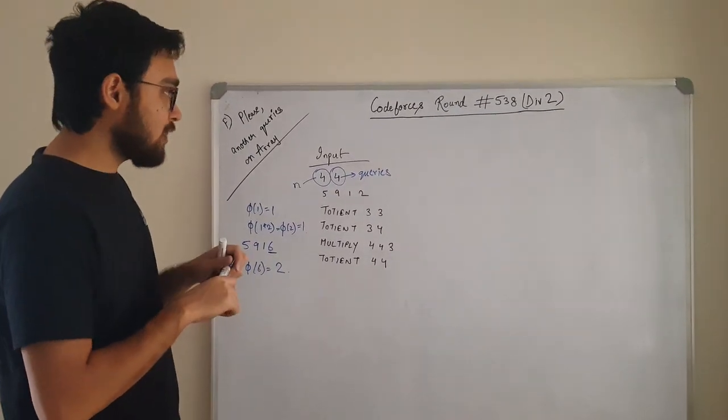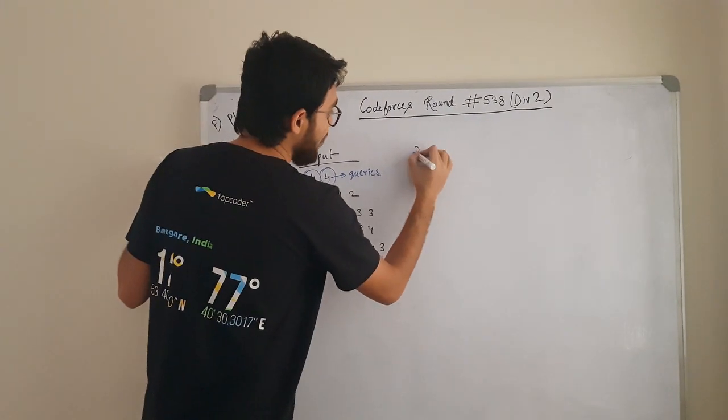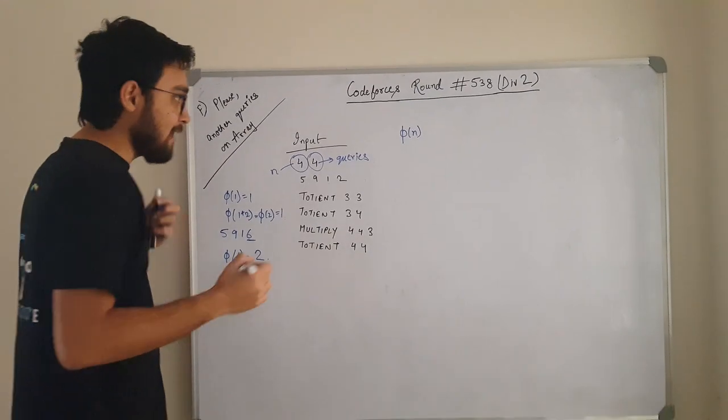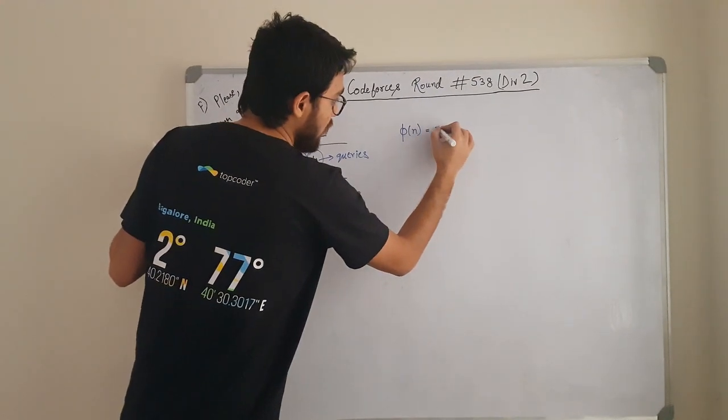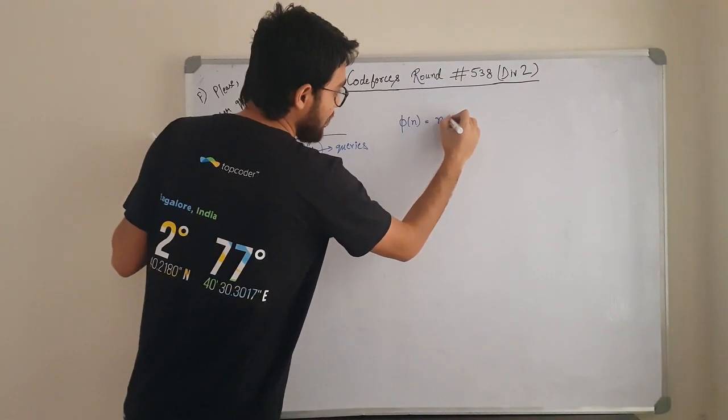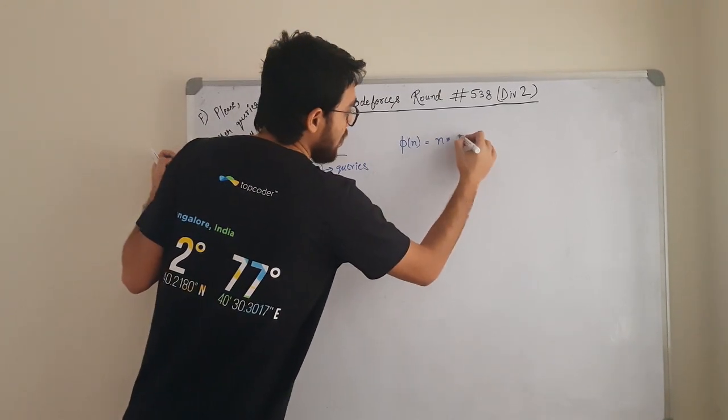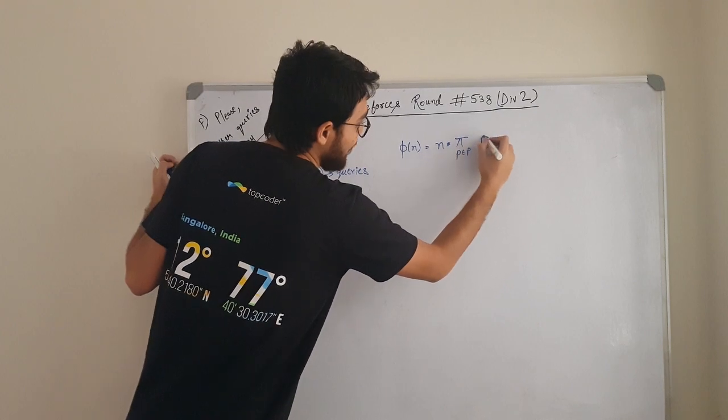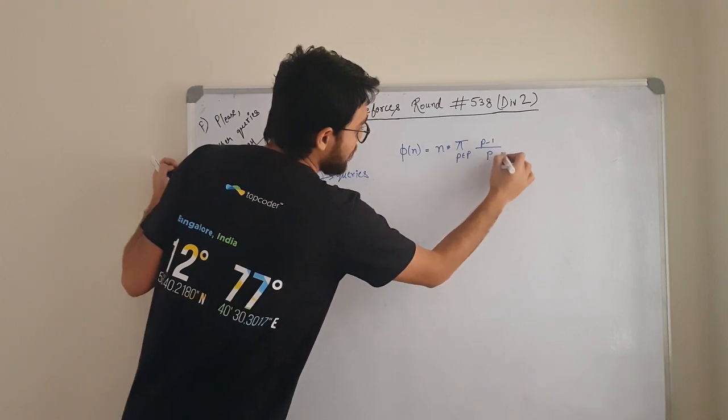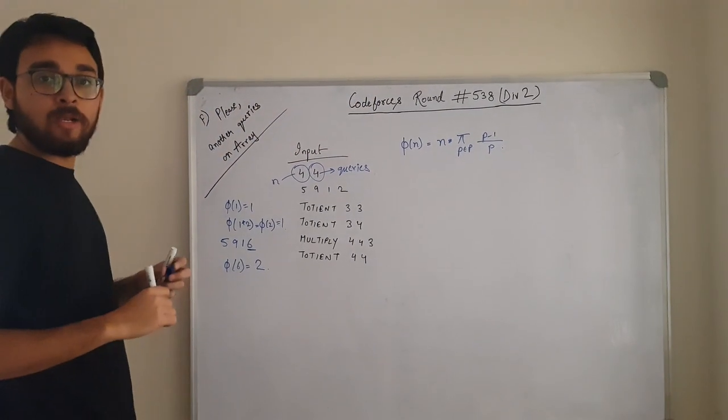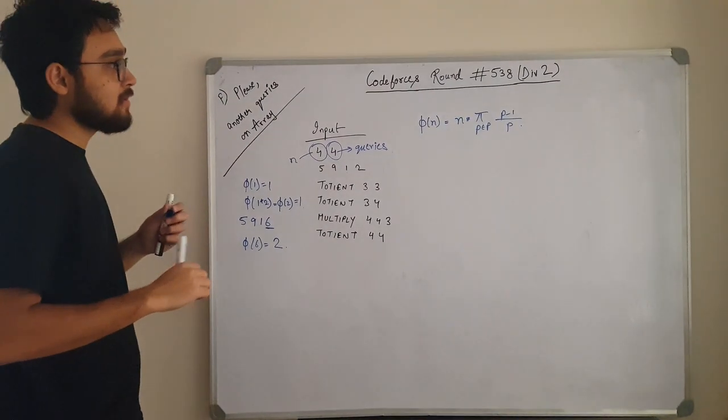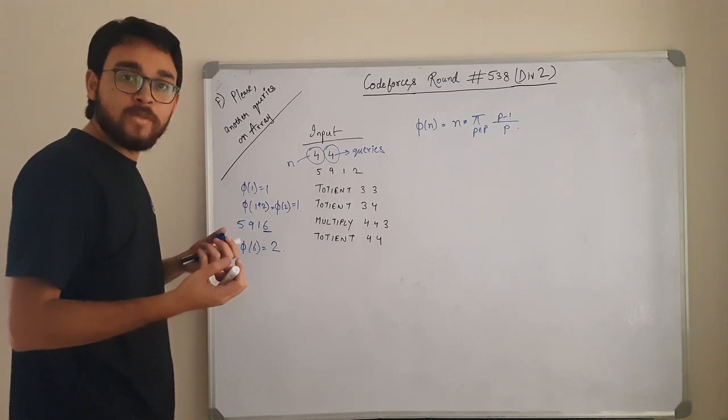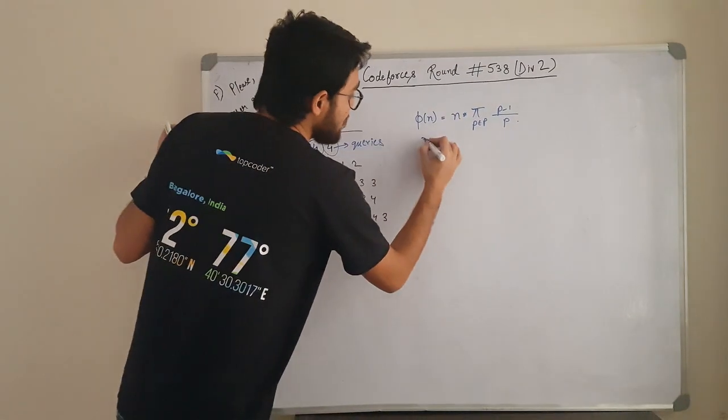Now, it is good to look into a few things. If you have n and you want to find φ of n, then it is equal to n multiplied by product of all the primes that it has. This is the formula. What is it doing? This t is the number of primes that are available in that number. Let us look for 6.